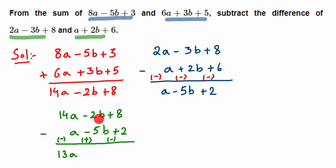Now solving: 14a minus a is 13a; minus 2b plus 5b is plus 3b; and 8 minus 2 is plus 6. So the final answer is 13a plus 3b plus 6. I hope that's clear. If you have any questions or a concept you'd like explained, please put a comment below and I'll try to make a video on it. Thank you for watching!